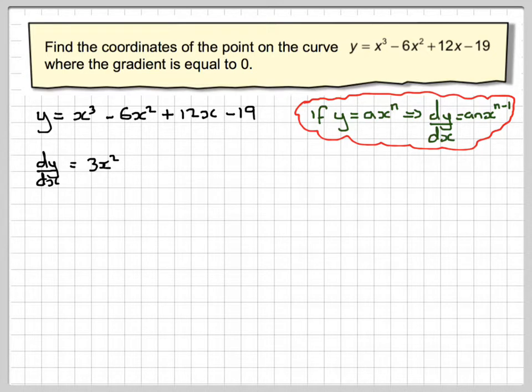So differentiating term by term, x cubed will become 3x squared, minus 6x squared will become minus 12x, plus 12 from there. And if you differentiate minus 19, you get nothing.